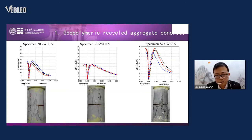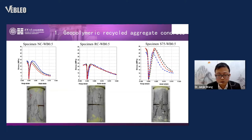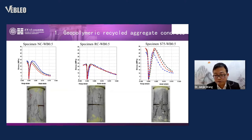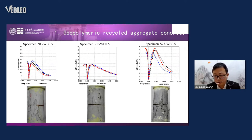Here we compare normal concrete, normal recycled concrete, and our geopolymeric recycled aggregate concrete. Normal concrete uses ordinary cement, aggregates, and water. For S75, our geopolymeric aggregate concrete uses geopolymer and recycled aggregates. We can see S75 has the best performance compared to normal concrete and recycled concrete.